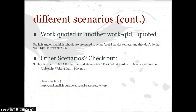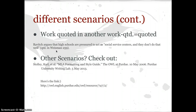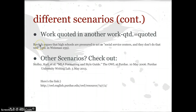What if you used a work that was quoted in another source? You would use qtd., which stands for 'quoted.' For example: 'Radvich argues that high schools are pressured to act as social service centers...' — this is quoted in Wiseman 259. Wiseman is the source that is in my works cited page. I'm not going to cite Radvich because I don't have his work; the source in my works cited page quoted this person. That's really important to note.